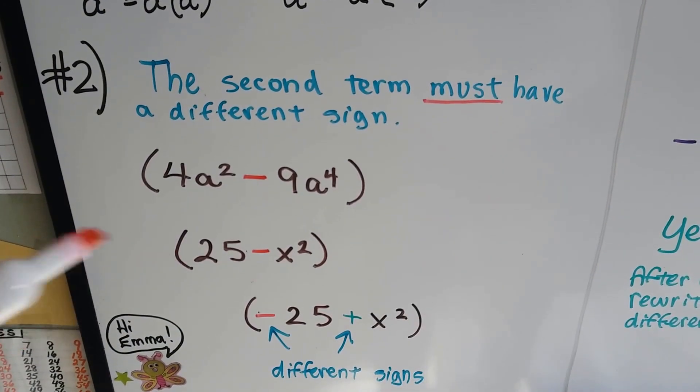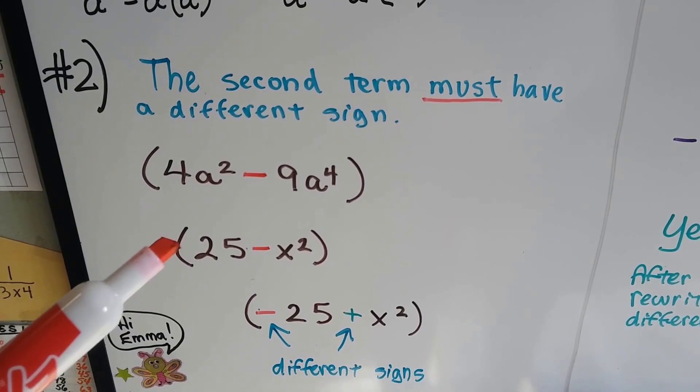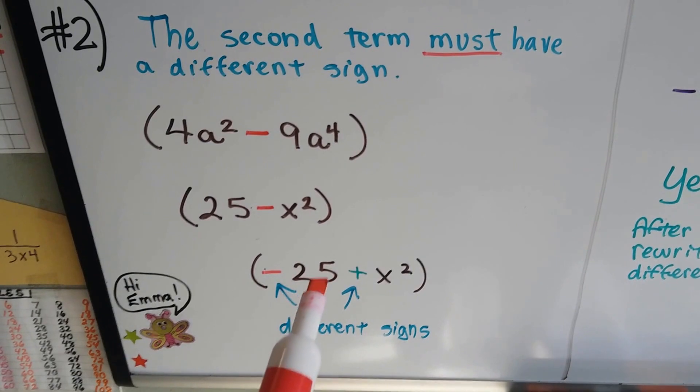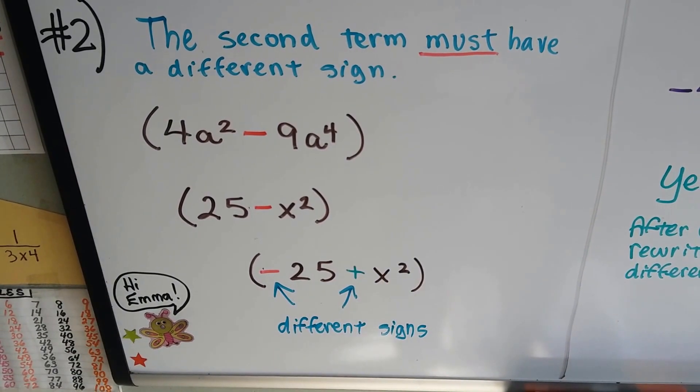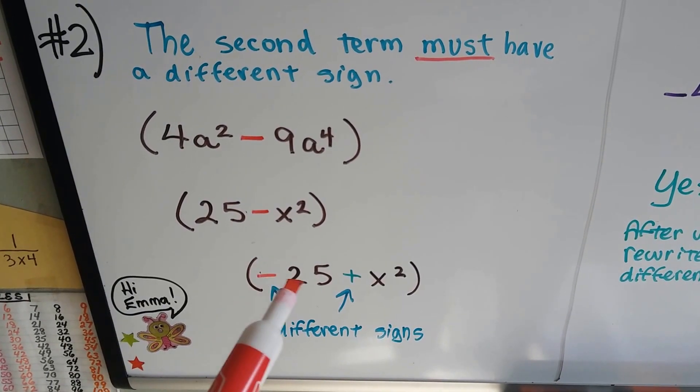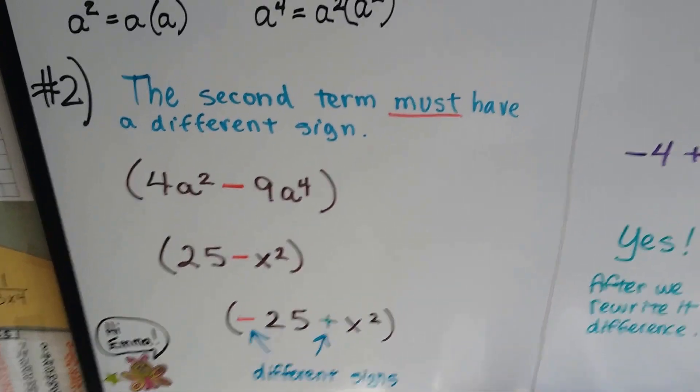We have a positive 25 minus x squared, positive, negative. Now look, we have a negative 25 plus x squared. Well, those are different signs so actually that would work even with the negative first and then a plus sign.